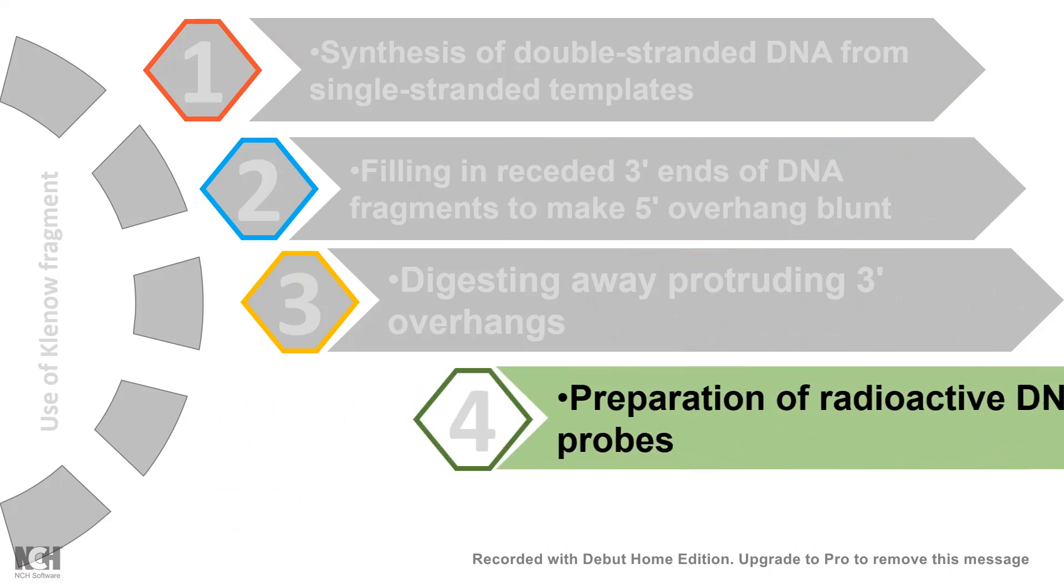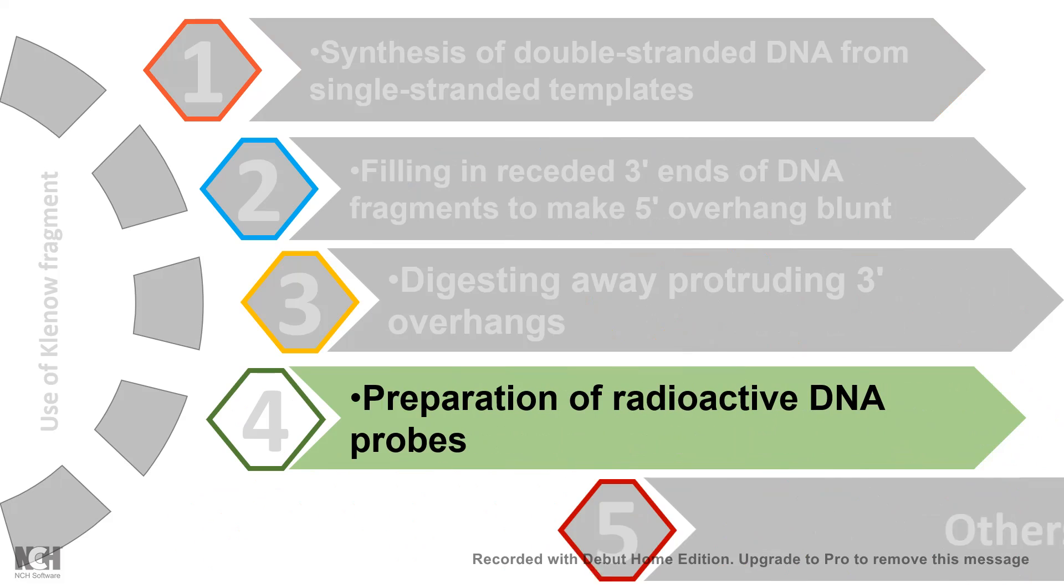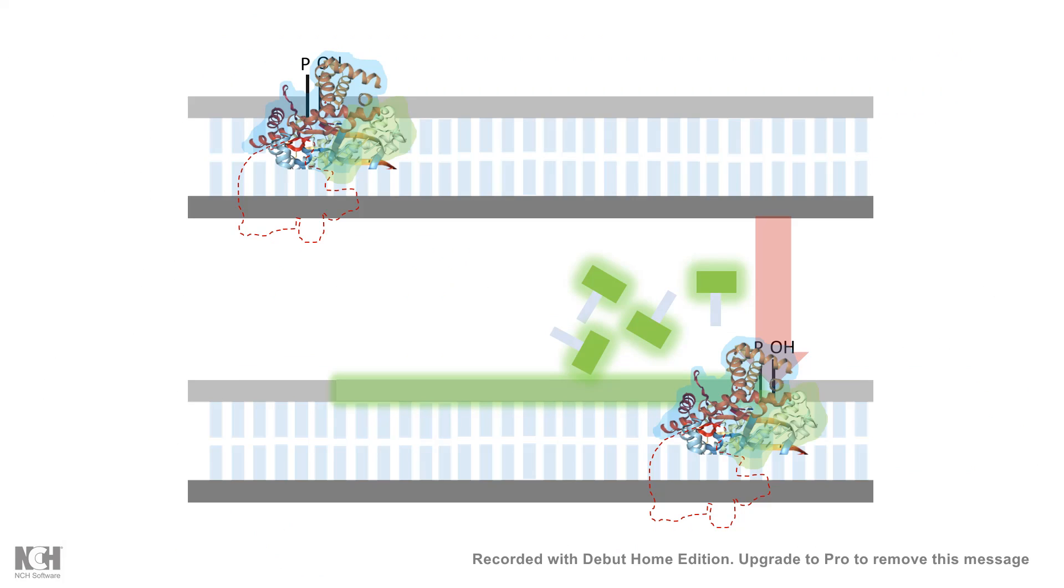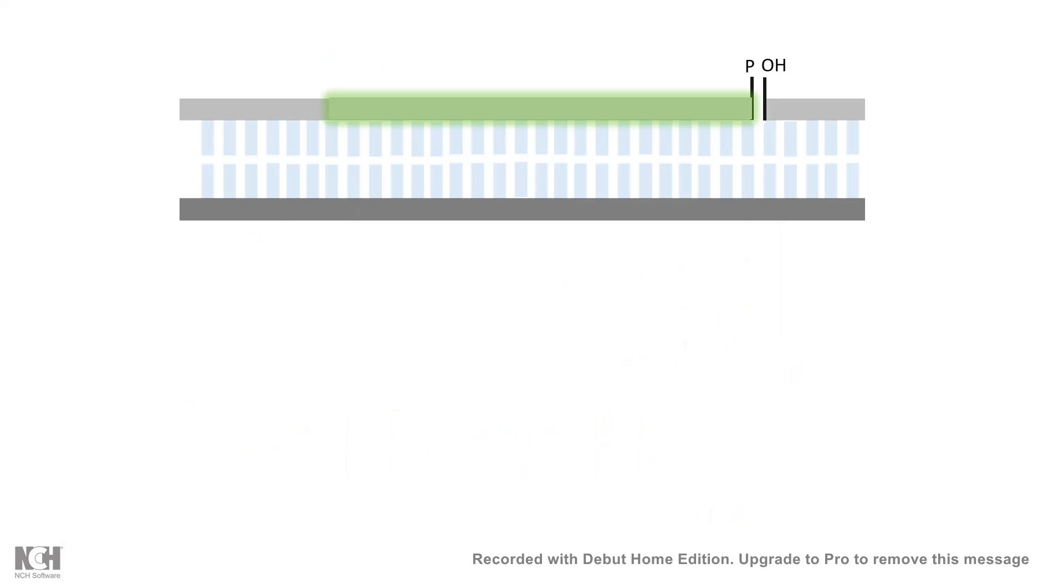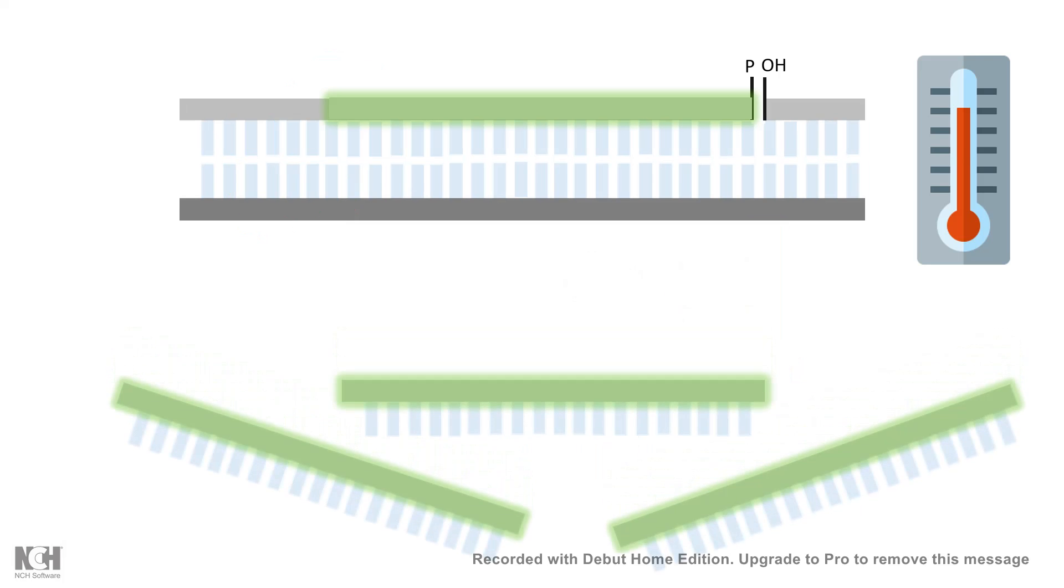So let's talk about how it could be used to create a radiolabeled probe. While the Klenow fragment is progressing in a 5' to 3' direction, it has its polymerase activity, and at that time if you put labeled nucleotide, it would incorporate that into the DNA, and later it could be used to create labeled probes.